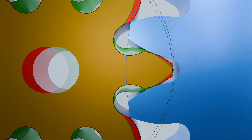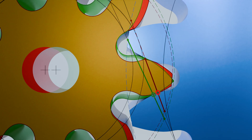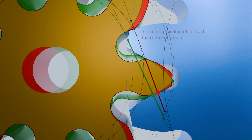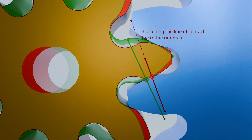A profile shift also affects the line of contact and the operating pressure angle. Comparing the meshing of the red standard gear and the green V-plus gear: a positive profile shift increases the distance between the base circles. As a result, the line of action tangent to the base circles becomes flatter, which increases the operating pressure angle. The animation shows that the line of contact of the profile shifted gear is significantly greater than that of the uncorrected gear, due to the avoidance of the undercut.